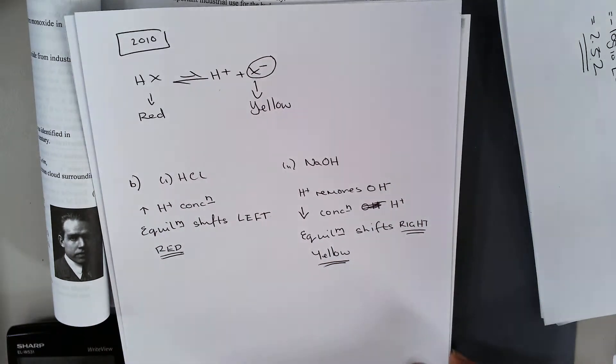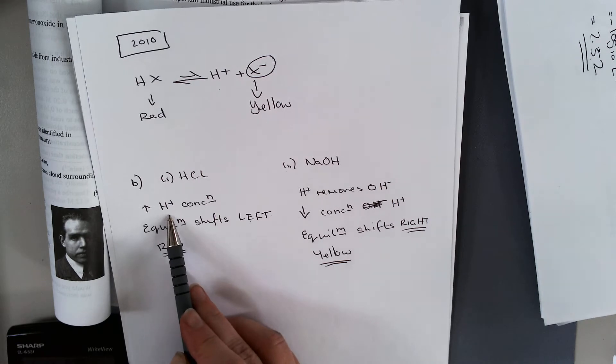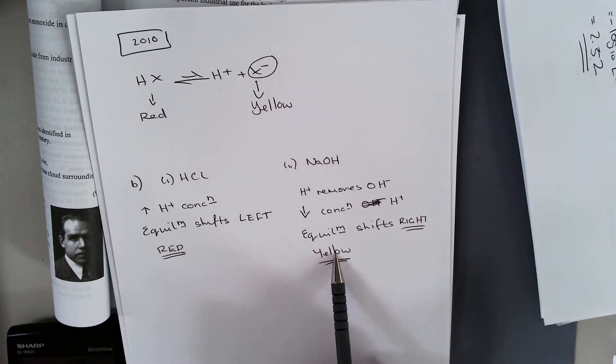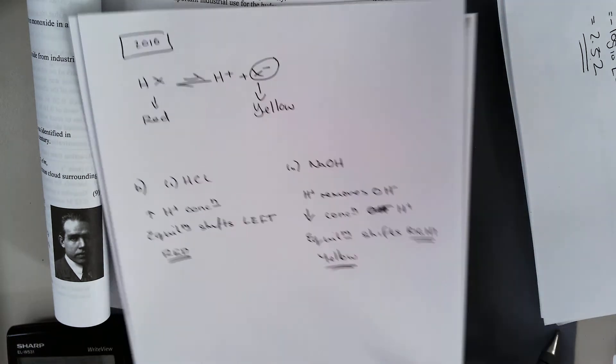Make sure you state the reason, i.e., the direction equilibrium shifts and why it shifts that way. The color produced and why the equilibrium shifts in the direction in which it does.